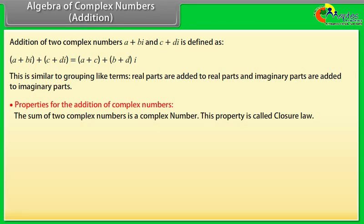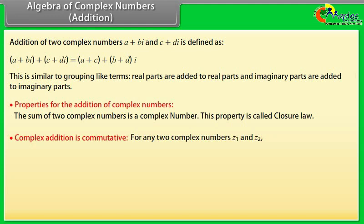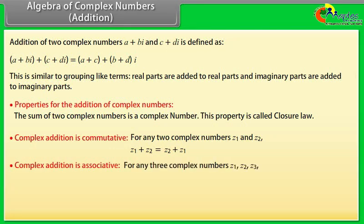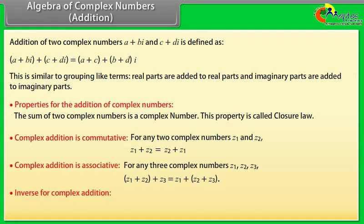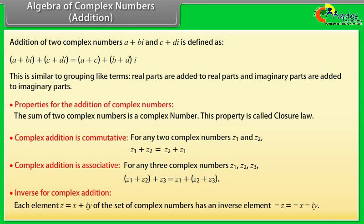Properties of the addition of complex numbers. The sum of two complex numbers is a complex number — this property is called the closure law. Complex addition is commutative: for any two complex numbers Z1 and Z2, Z1 plus Z2 equals Z2 plus Z1. Complex addition is associative: for any three complex numbers Z1, Z2, Z3, (Z1 plus Z2) plus Z3 equals Z1 plus (Z2 plus Z3). Each element Z equals X plus iota Y has an additive inverse: minus Z equals minus X minus iota Y.